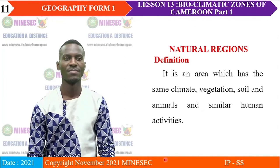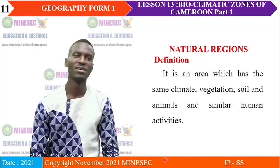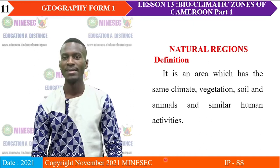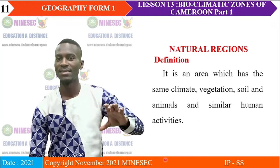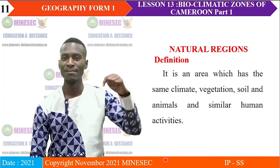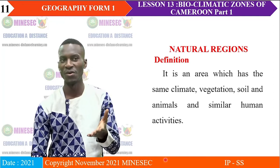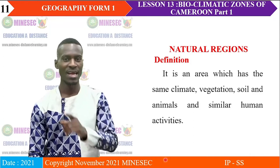We therefore have the notion of natural region. A natural region is an area which has the same climate, the same vegetation, the same soil, the same animals that live there — these natural characteristics are the same. They in turn influence the same kind of human activities. So a natural region is an area with the same climate, the same vegetation, soil, animals and, consequently, similar human activities.